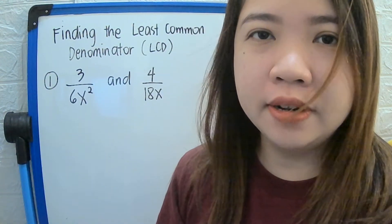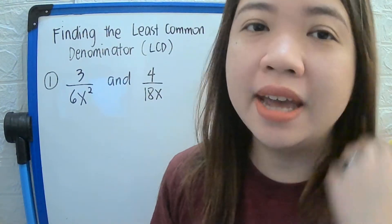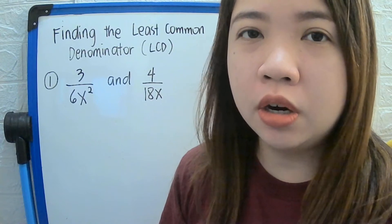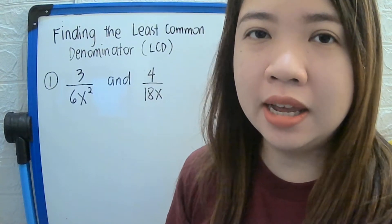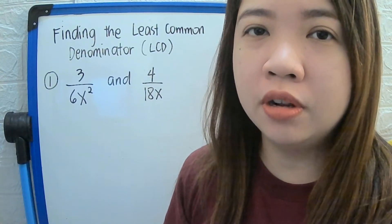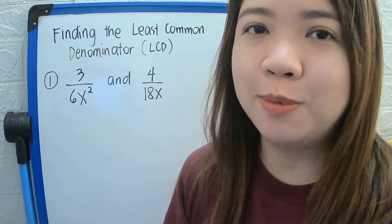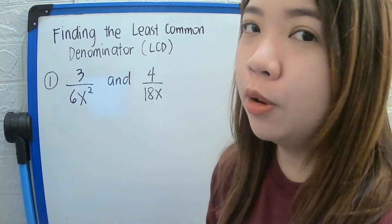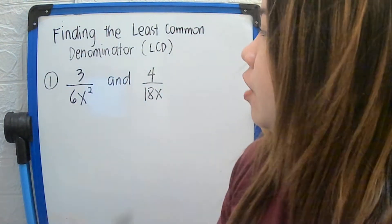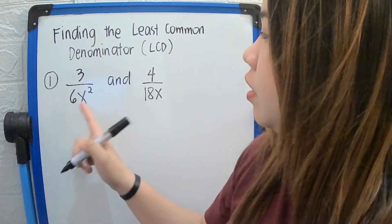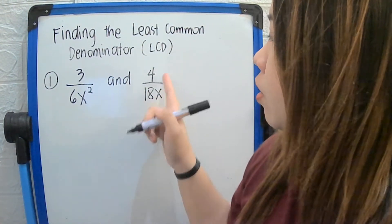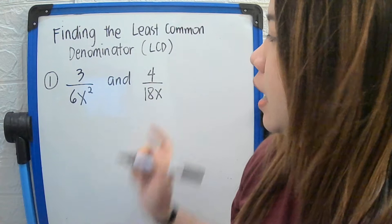Our lesson for today is about finding the least common denominator, or LCD, in rational algebraic expressions. For example, we have 3 over 6x squared and 4 over 18x.